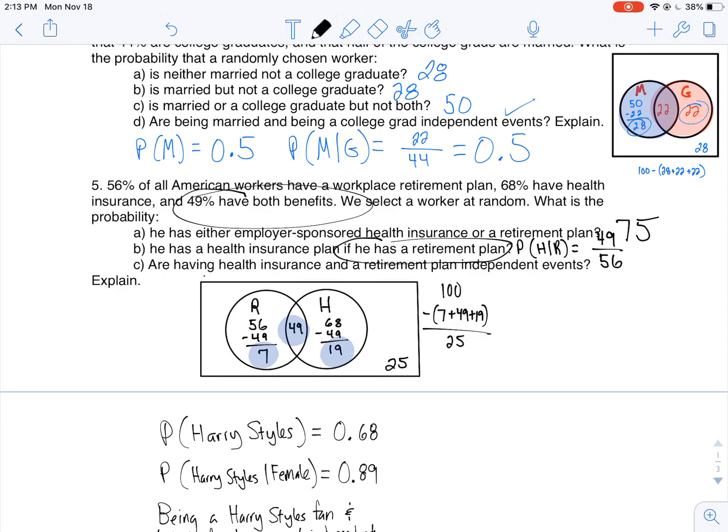Now it's asking me if having health insurance and a retirement plan are independent events. Explain. Here's what I can do. There are a lot of ways you can go about doing this. I'm gonna show you several different ways you can prove independence. One way: if they're independent events, the probability of one times the probability of the other should give me the probability of both.